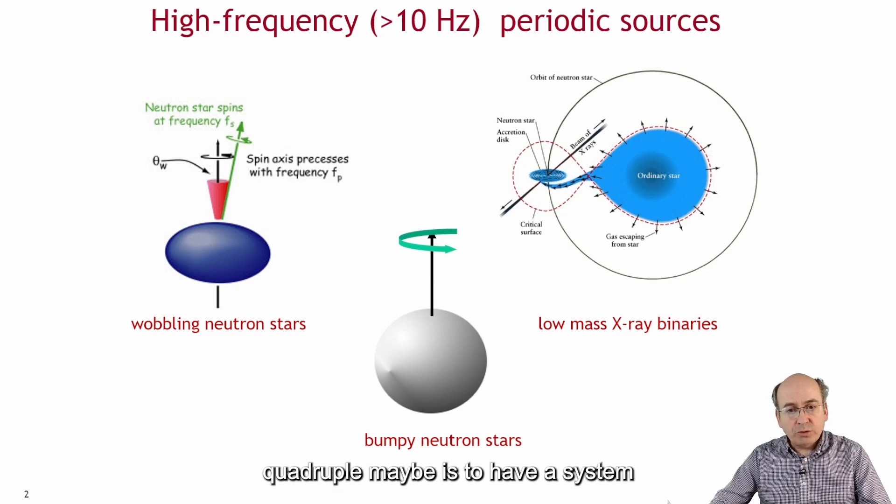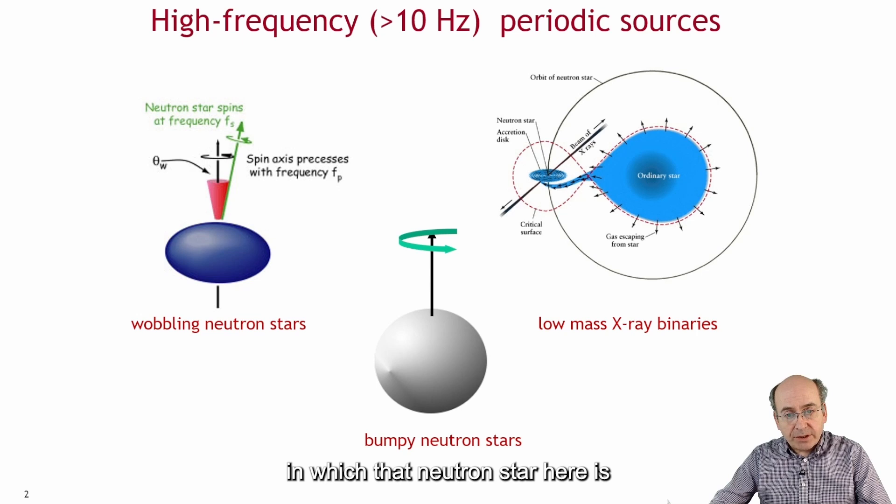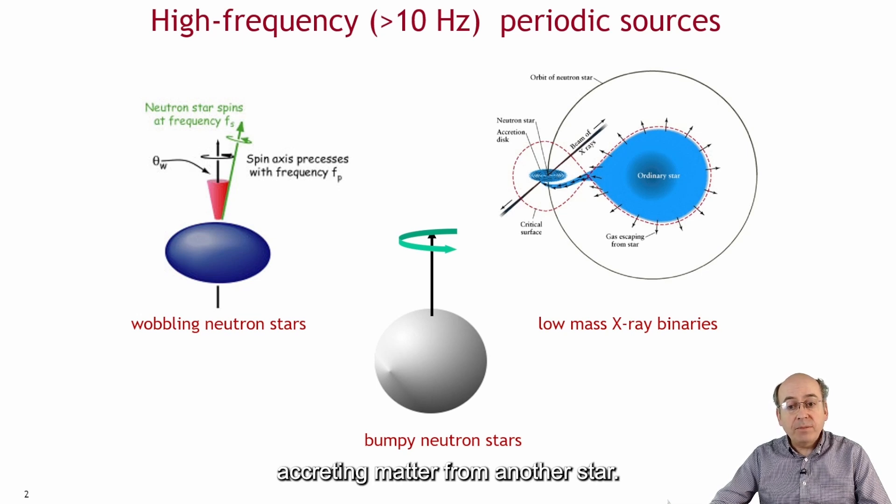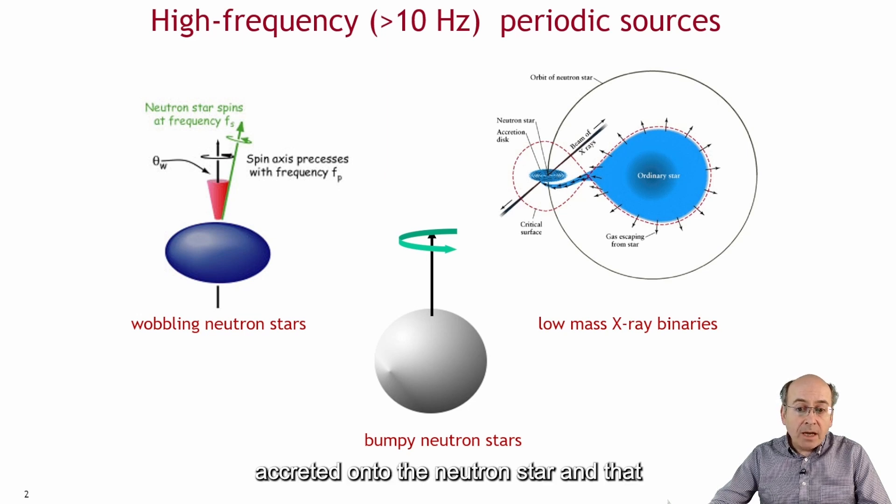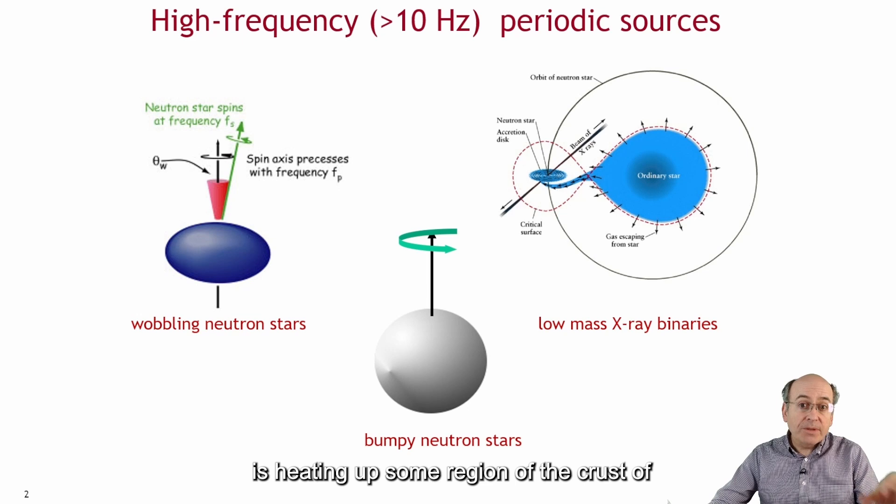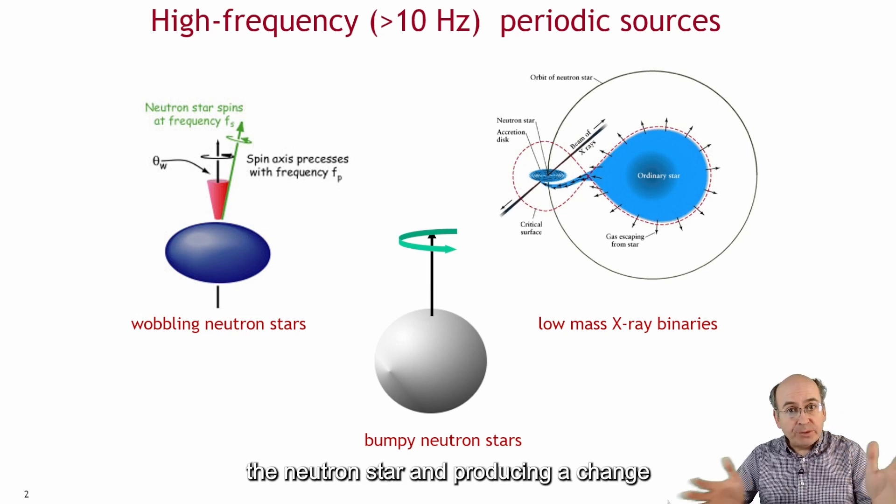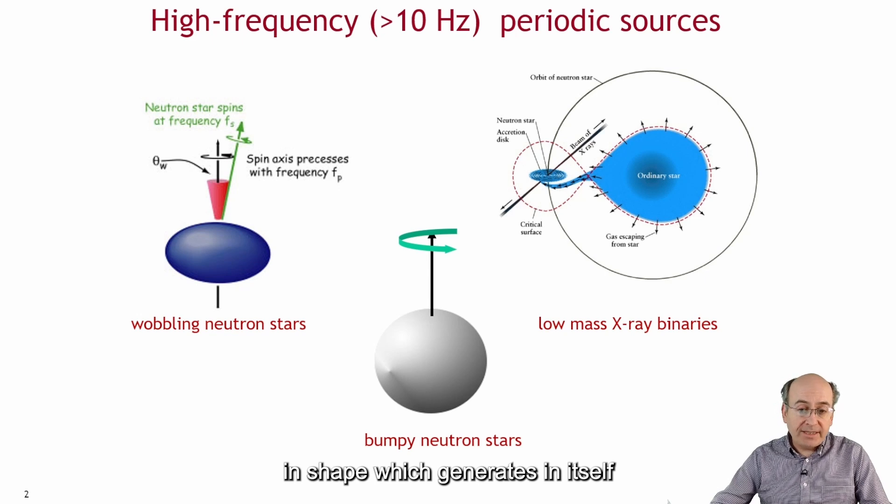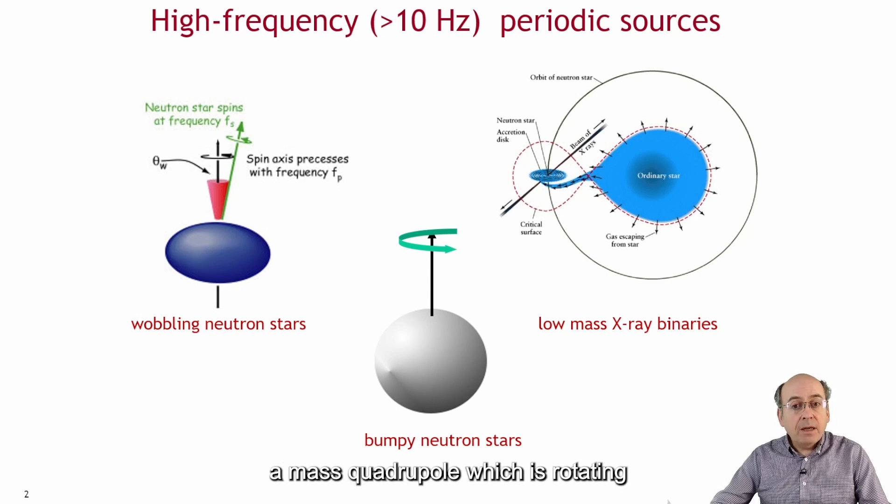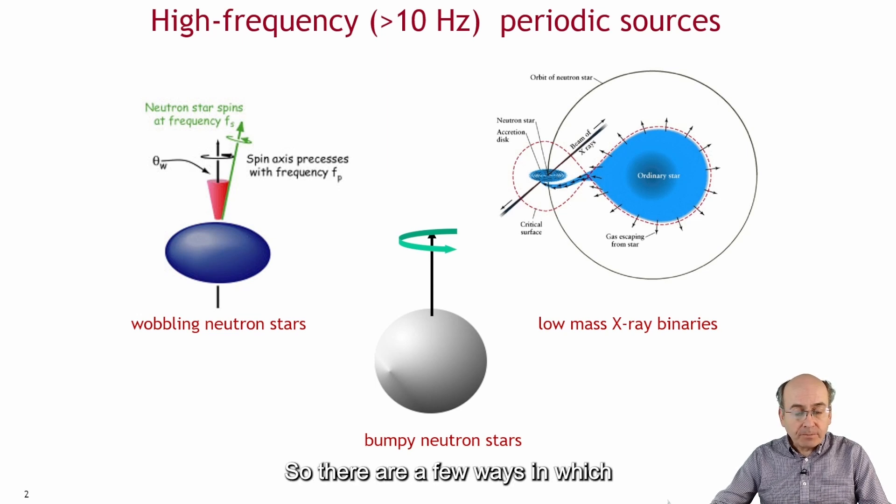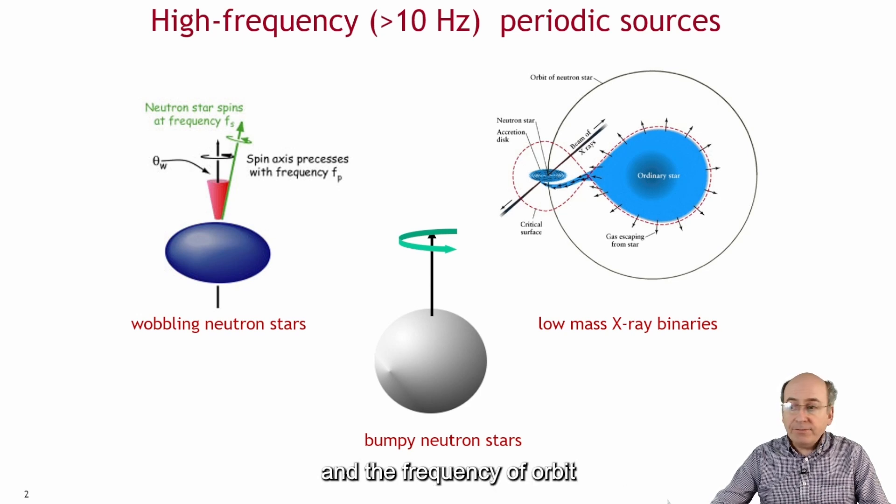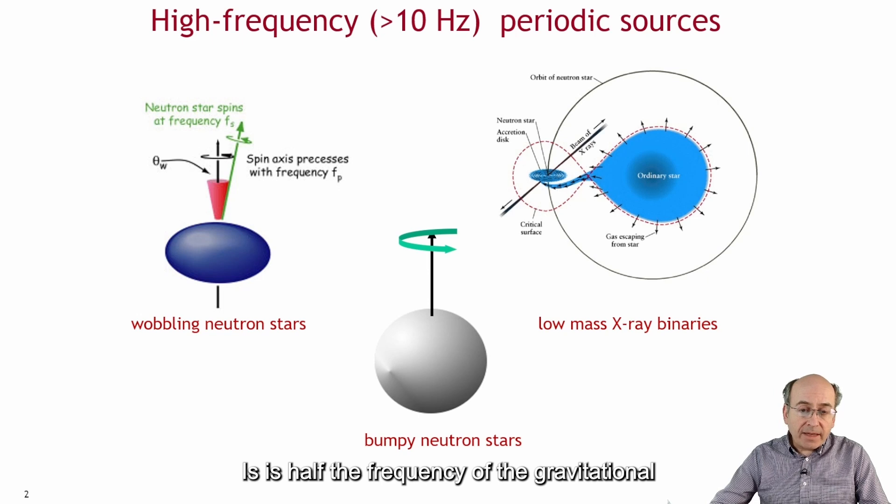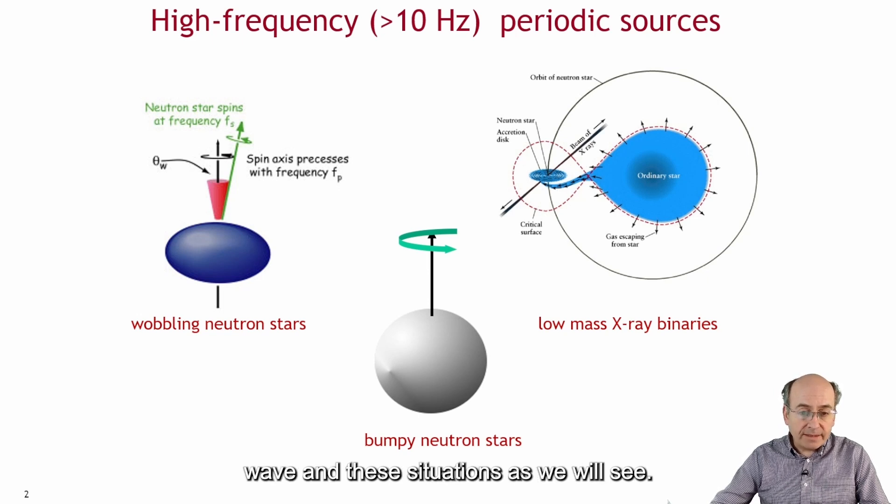And another way to make the mass quadrupole maybe is to have a system in which that neutron star is accreting matter from another star. Some kind of a system where material from a companion star is being accreted onto the neutron star, and that's heating up some region of the crust of the neutron star and producing a change in shape which generates itself a mass quadrupole which is rotating and therefore gravitational waves. The frequency of orbit is half the frequency of the gravitational wave in these situations as we will see.